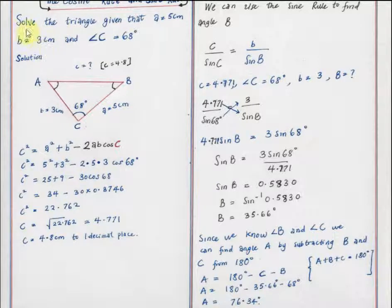In this question we're told to solve the triangle given that A equals 5 cm and B equals 3 cm and angle C equals 68 degrees. This question only gives us three parameters: side A, side B, and angle C.